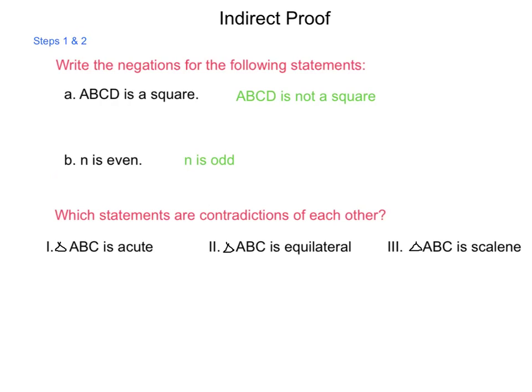So writing the negation of a statement becomes important, but also finding contradictions. So in the bottom here, I have three statements. Statement one, triangle ABC is acute. Statement two, triangle ABC is equilateral. And statement three, triangle ABC is scalene. Two of these contradict one another. So let's start taking them pair by pair.